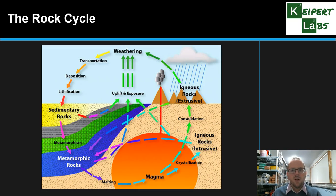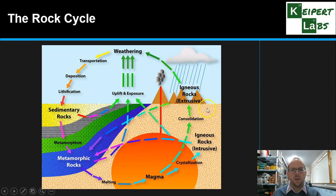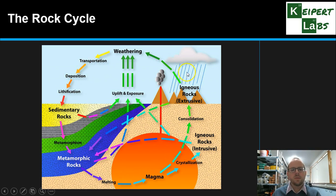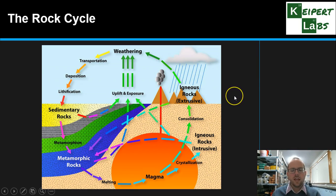Thinking about something called the rock cycle, which we're going to go through in more detail in a future video, showing how the different kinds of rocks on Earth are connected to one another. We have igneous rocks on the right, sedimentary rocks on the left, and metamorphic rocks on the bottom left. The arrows and labels show some of the processes involved in converting one rock type to another.